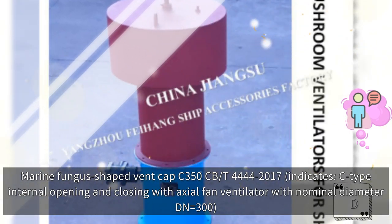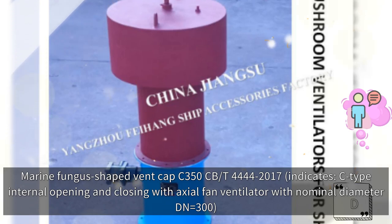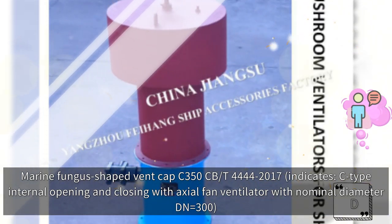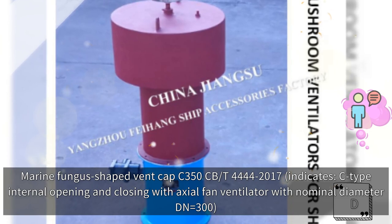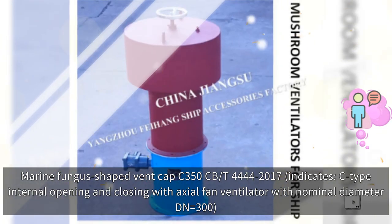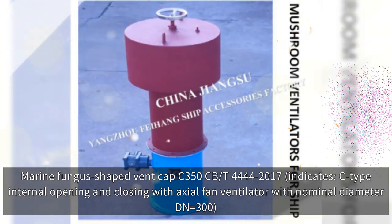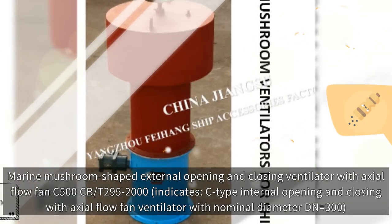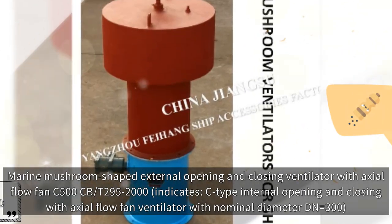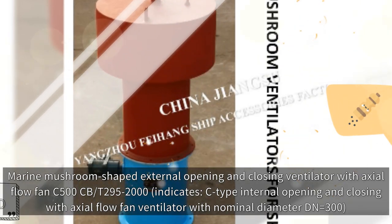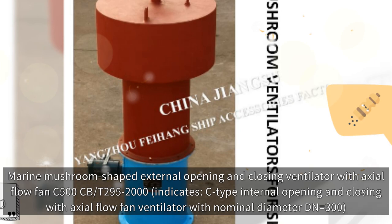T4444-2017 indicates a C-type internal opening and closing with axial fan ventilator with nominal diameter DN equals 300. Marine mushroom-shaped external opening and closing ventilator with axial flow fan C500, CB-T295-2000, indicates a C-type internal opening and closing ventilator with nominal diameter DN equals 300.